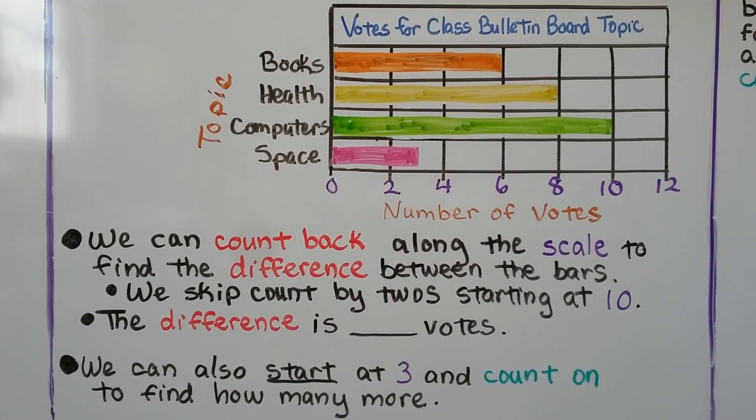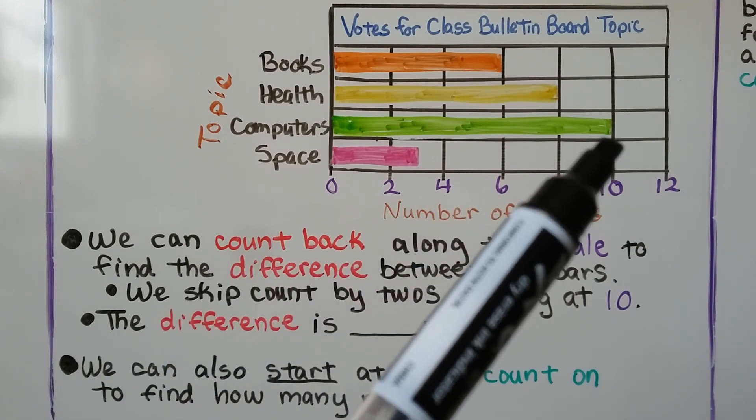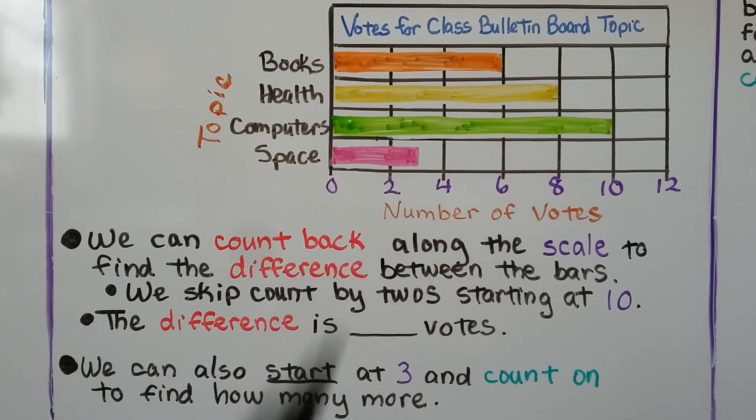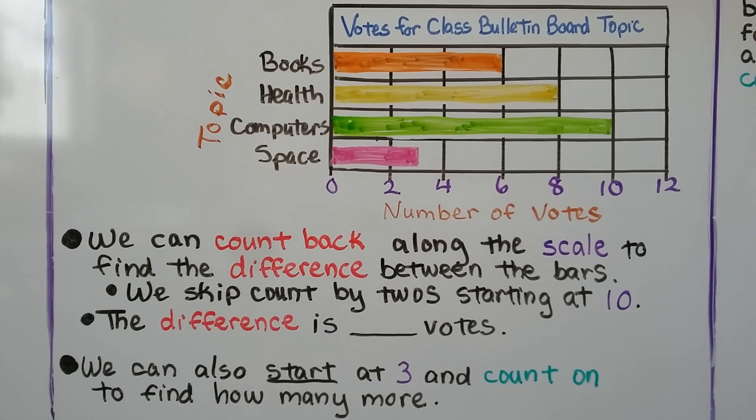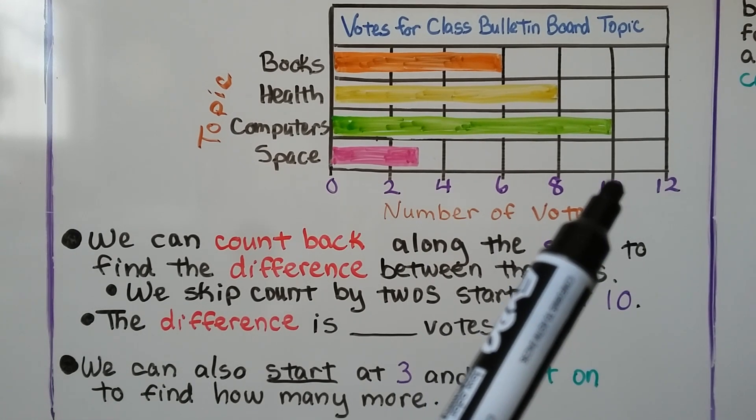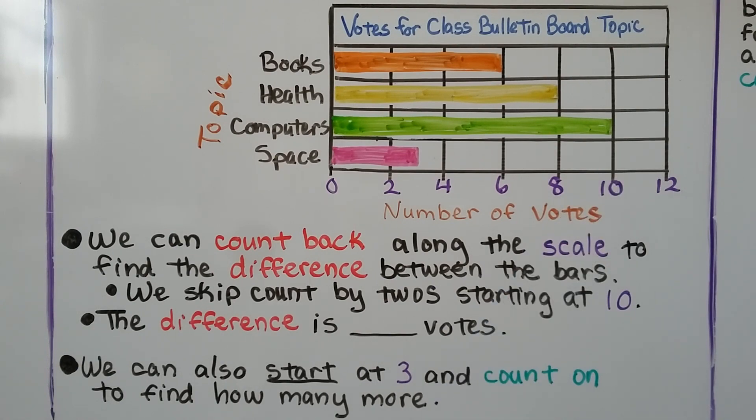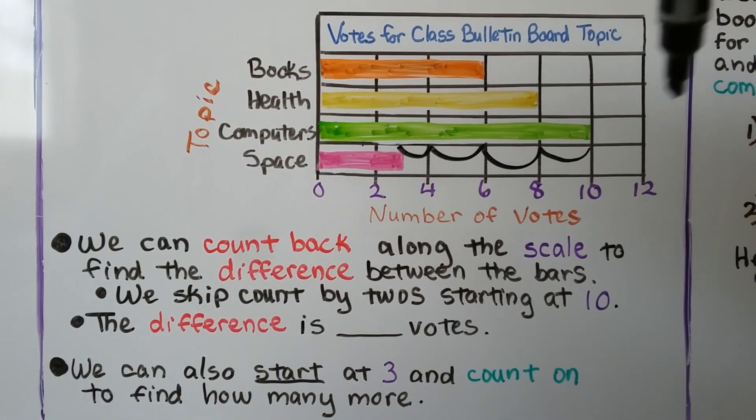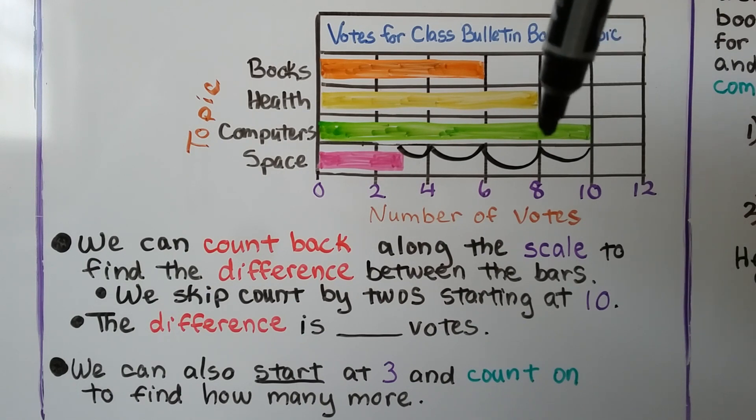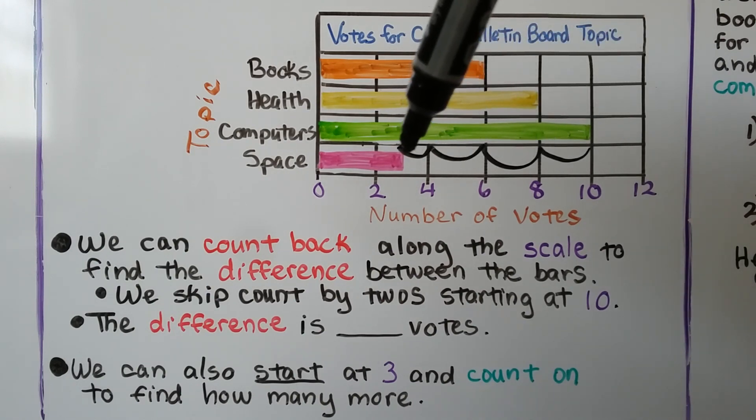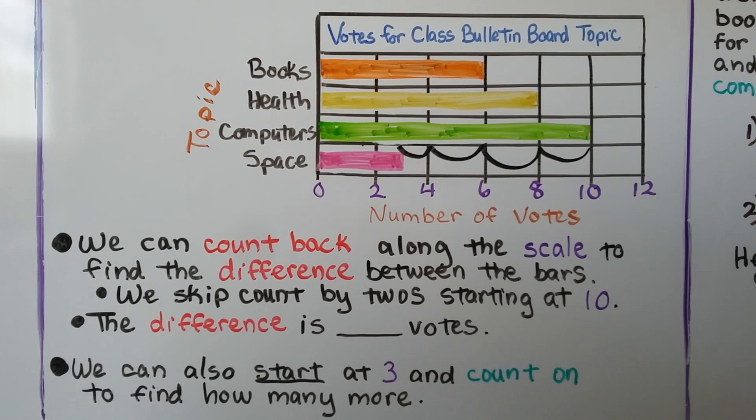We need to find how many more votes computers received than space, so we need to compare computers to space. We can count back along the scale to find the difference between the bars. We can skip count by twos starting at the ten: two, four, six, and one more would be seven. The difference is seven votes.